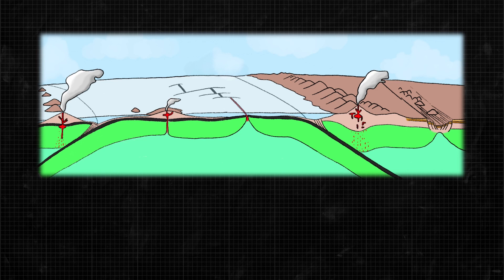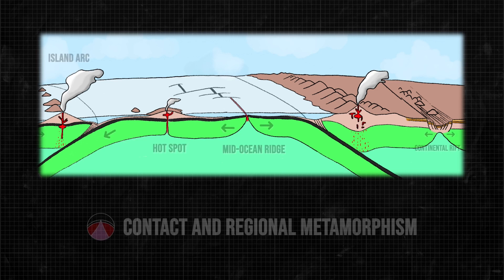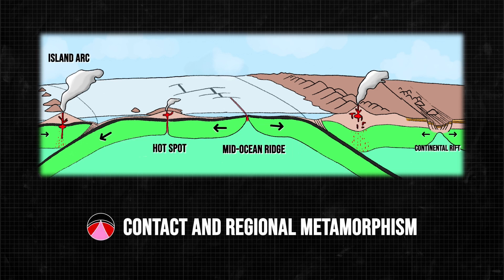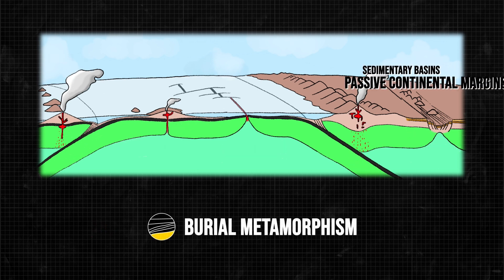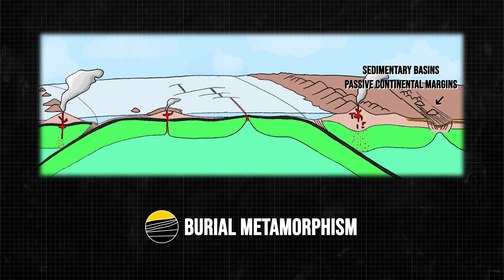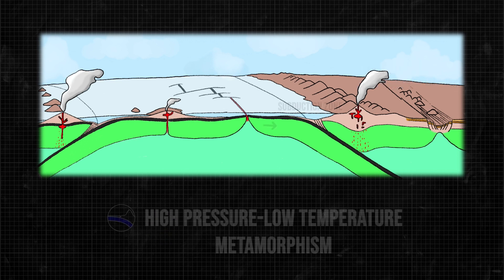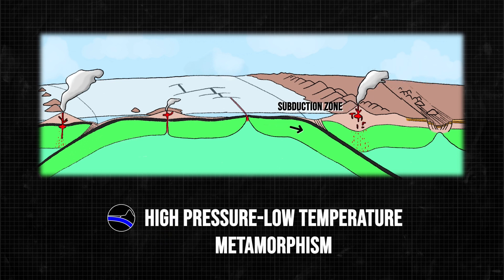These can be assigned to specific plate tectonic environments. Divergent plate margins and the hot, magma-rich parts of convergent plate margins are associated with contact and regional metamorphism, whereas transform plate margins are associated with burial metamorphism, and the cold parts of convergent plate margins are associated with high-pressure low-temperature metamorphism.